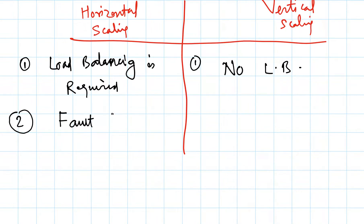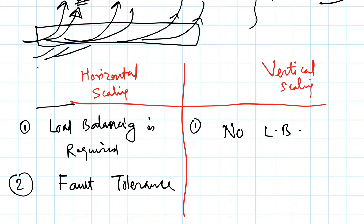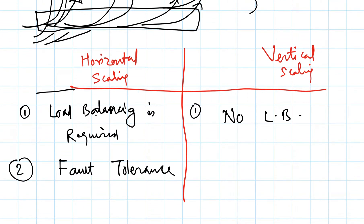Next is, if sometime fault occurs, then this horizontal scaling system is more robust. Suppose some fault occurs in this system and this system goes down, so you can still route the request to these two computers only, or if you have more computers, then all these computers except this one can still process those requests. But in case of vertical scaling, if this system goes down then suddenly all the requests stop from being processed because you had only one system and there is some fault in that. So it's a single point of failure.